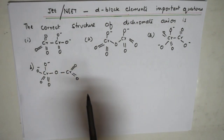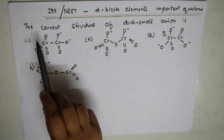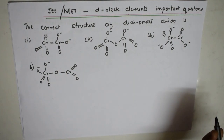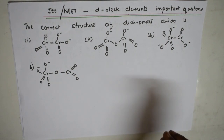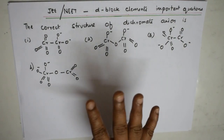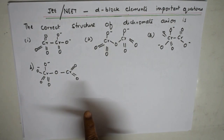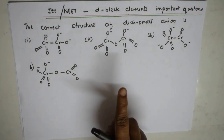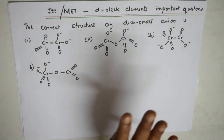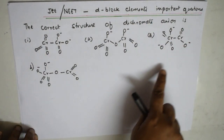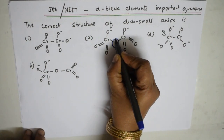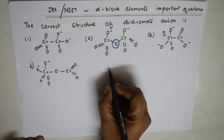This is a very important question they have been asking frequently. The correct structure of the dichromate anion — that is CR₂O₇²⁻. We know both chromate and dichromate anions. The key feature of dichromate is that it has something called an oxoanion in the center.